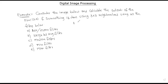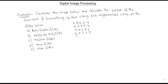I am going to take the image values: 1, 8, 8, 0, 7, 4, 7, 9, 5, 7, 9, 5, 4, 6, 8, 6, 4, 2, 0, 0, 1, 5, 0, 1, 0, 2, 0.